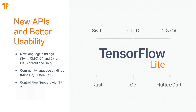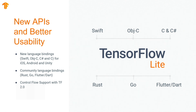We also want to make it easy for any app developer to use TensorFlow Lite. To that end, we've released a number of new first-class language bindings, including Swift, Objective-C, C Sharp for Unity, and more. This complements our existing set of bindings in C++, Java, and Python. And thanks to community efforts, we've seen the creation of additional bindings in Rust, Go, and even Dart. As an open source project, we welcome and encourage these kinds of contributions.